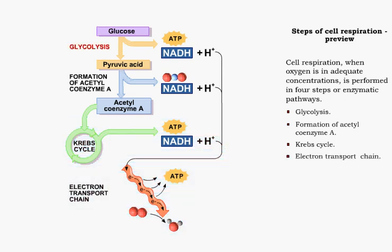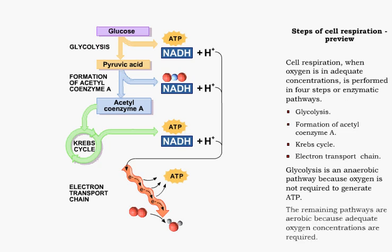Because glycolysis generates ATP in the absence of oxygen, it is considered an anaerobic pathway. To generate numerous ATP molecules, oxygen is needed. The remaining three pathways require oxygen and are considered to be aerobic pathways.